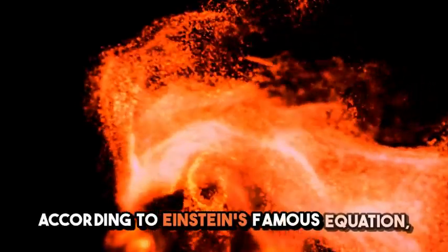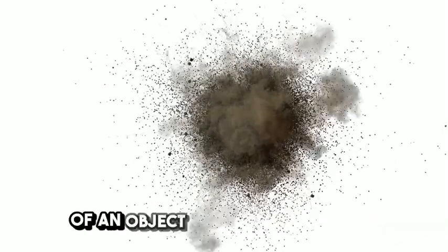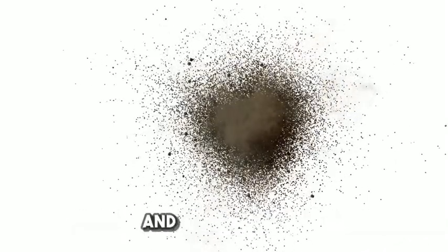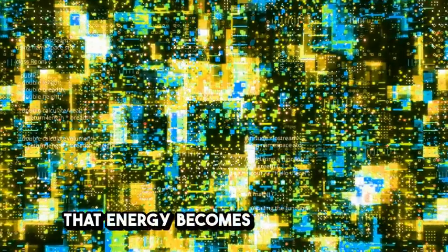According to Einstein's famous equation, E equals mc squared, the energy of an object increases with speed. And at light speed, 299,792,458 meters per second, that energy becomes astronomical.